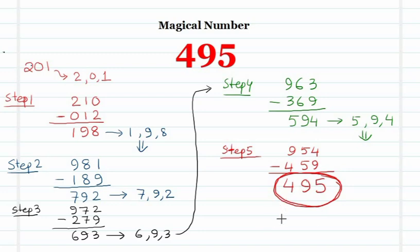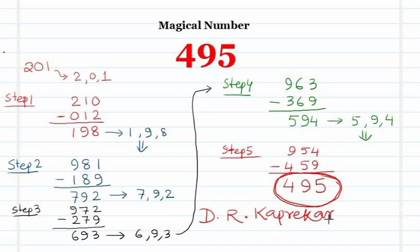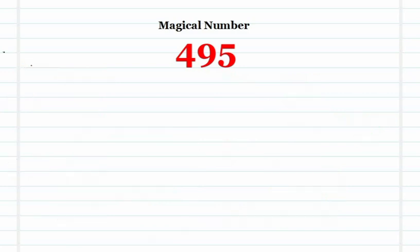495 is a very special number, and that is due to Indian number lover Dr. Kaprekar. Sometimes this number is also called Kaprekar's constant.